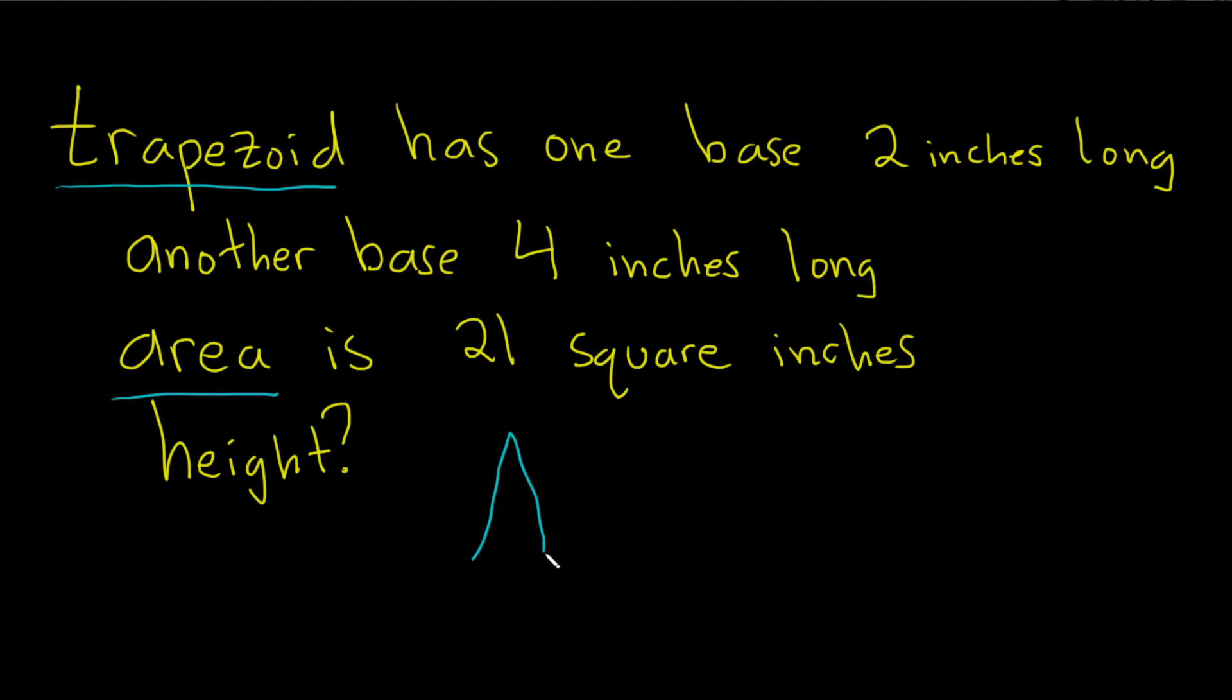The area of a trapezoid is A, and it's equal to the first base plus the second base divided by two, times h. So A = (b₁ + b₂)/2 × h.